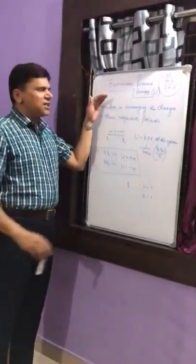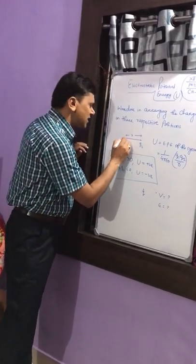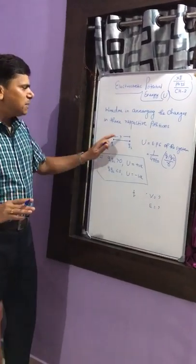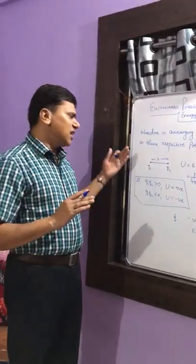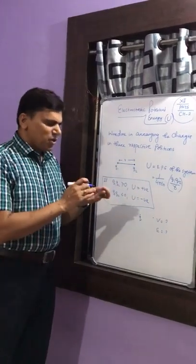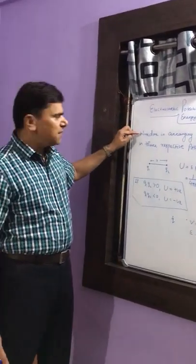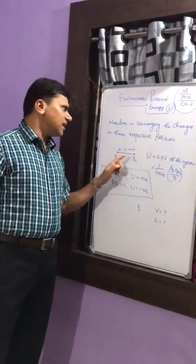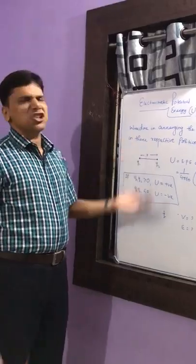We will have electrostatic potential energy if at least two charges are there. Suppose we have a two-charge system with Q1 and Q2 placed at a distance R apart. This system will have potential energy given by the work done in arranging these charges in their respective positions.